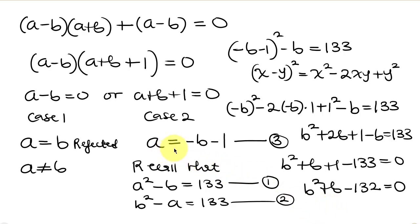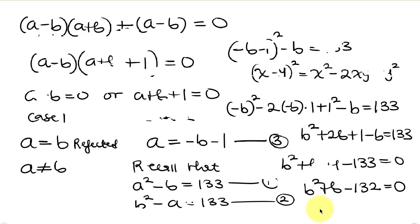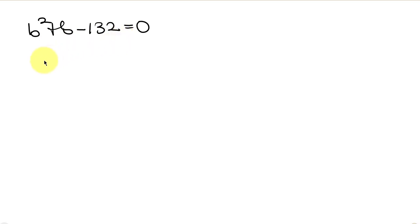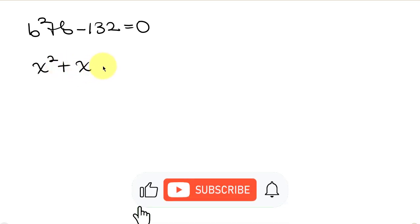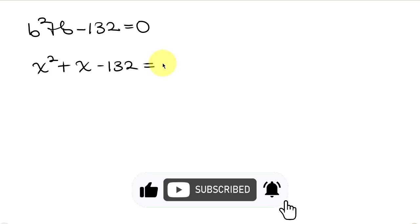We substituted equation 3 into equation 1. If we substitute equation 3 into equation 2, we get the same equation — these two equations are symmetric. So we write this as a quadratic equation in terms of x, where a and b are the roots: x squared plus x minus 132 equals 0.